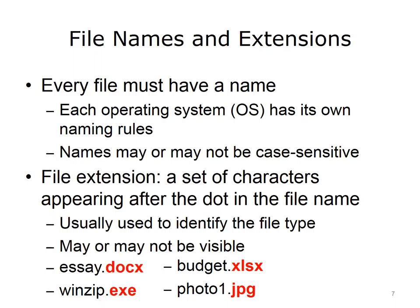Depending on the settings of the file system, file extensions may or may not be visible in the user interface. File extensions are somewhat up to the user to maintain correctly. An application that creates a file will automatically append the correct extension to the file name, but it may be changed later by a user or another application. Some examples of file names with extensions are essay.docx, which is a Microsoft Word document named essay; budget.xlsx, which is a Microsoft Excel spreadsheet named budget; winzip.exe, an executable program named winzip; and photo1.jpg, which is a JPEG formatted image named photo1.